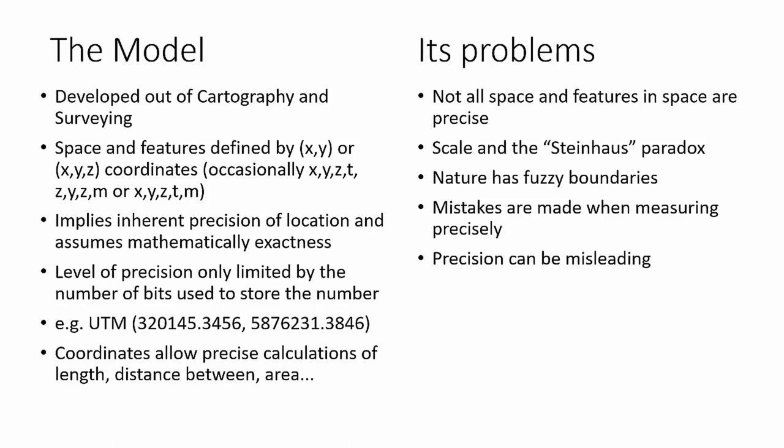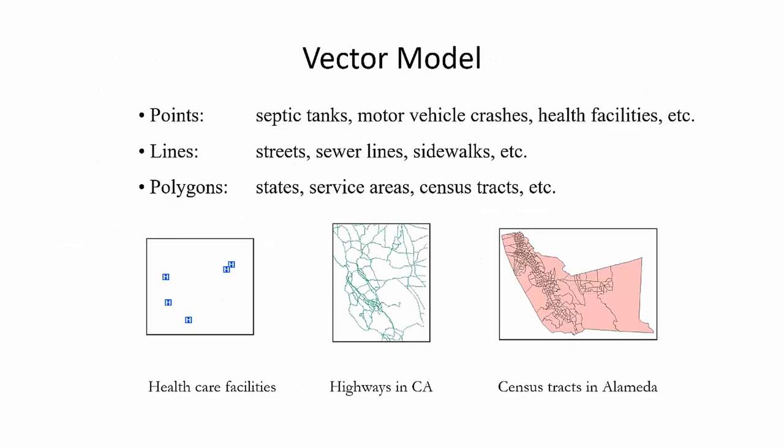Vector has problems too. Not all features in space have precise boundaries — some have fuzzy boundaries and you're making a judgment call on where to divide them. That can be challenging, especially when you have to consider carefully the scale at which you're mapping. The larger the scale, the more precisely you'll capture the boundary, but you have to do that consistently across the landscape. A common problem is that this assumed precision can be misleading and make people think the model is correct.